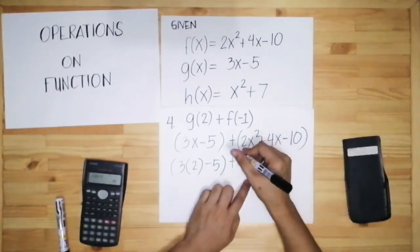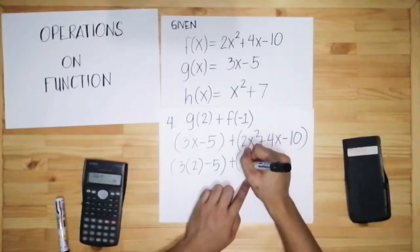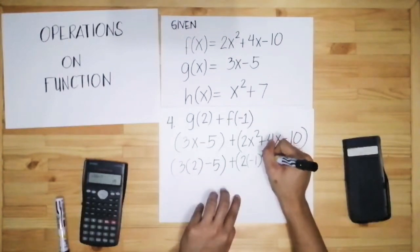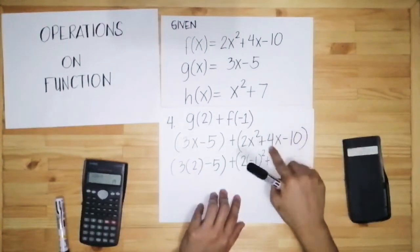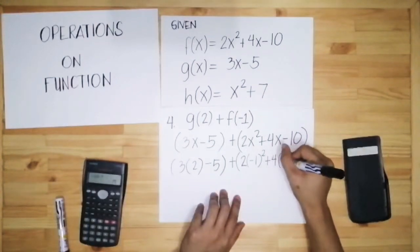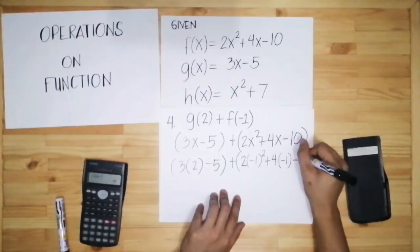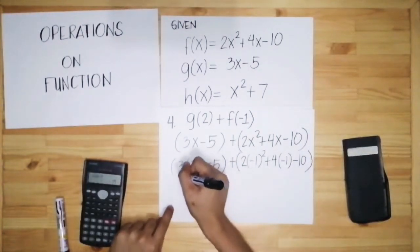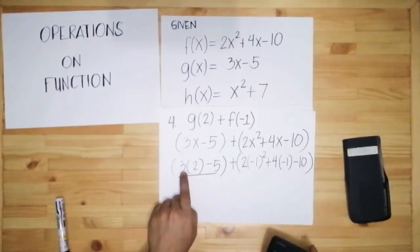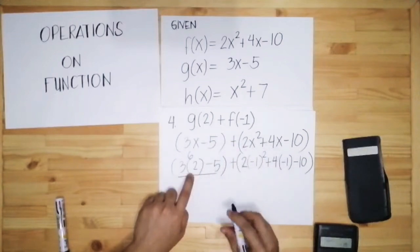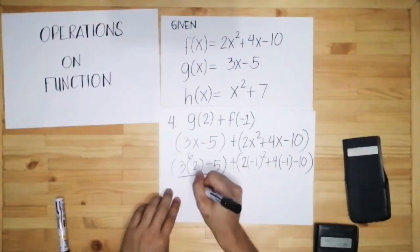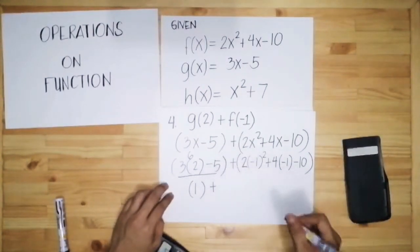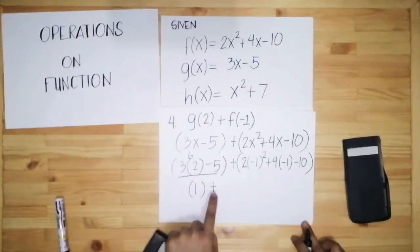The x values are different for each parenthesis. In the first parenthesis for g, substitute x with 2: we get 3 times 2 minus 5. Close parenthesis. Then plus, open parenthesis, and for f substitute x with negative 1: 2 times negative 1 raised to 2, plus 4 times negative 1, minus 10. Close parenthesis. Now solve: 3 times 2 is 6, and 6 minus 5 is 1.